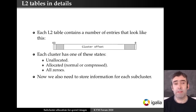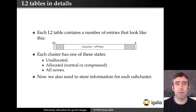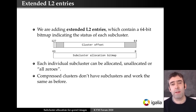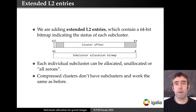Internally, the L2 table contains pointers to the data clusters — basically the cluster offset plus a few bits indicating whether the cluster is allocated, compressed, or contains zeros. 'Contains zeros' is a QCow2 feature meaning the cluster has no data other than zeros, so there's no need to go to the data cluster and read from there. If we have sub-clusters, we need to store additional information. So we added extended L2 entries, which are similar to the ones before but contain an additional bitmap indicating the status of each sub-cluster. With this, each individual sub-cluster can be allocated, unallocated, or flagged as all zeros.